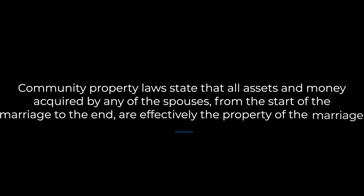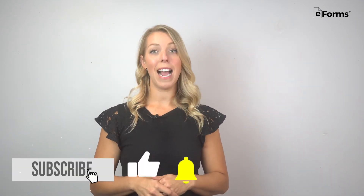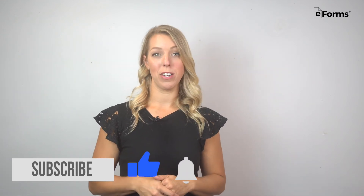Now let's look at some of the legal requirements in New Mexico. New Mexico is one of only nine states governed by community property laws. Community property laws state that all of the assets and money acquired by any of the spouses from the start of the marriage to the end of the marriage are effectively the property of the marriage. Under this structure, each spouse automatically owns 50% interest in all of the assets, money, and debts that were acquired during the marriage. Community property is generally divided equally after a divorce, but it varies from case to case depending on the nature of the situation. Dispersions will be applied by a judge if both spouses cannot come to a mutual agreement through a settlement.